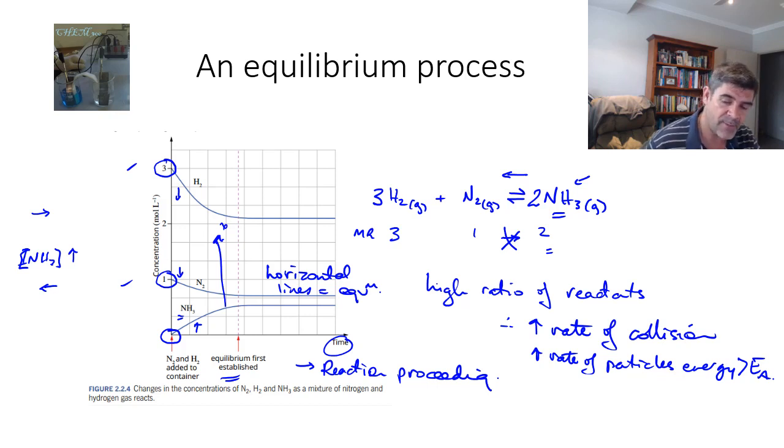Notice also from this diagram that equilibrium does not mean equal amounts of the hydrogen, the nitrogen, or the ammonia. All we have is a horizontal line representing that the rates are the same, and therefore there's no further change in the concentration of each of these species. Thanks for watching.